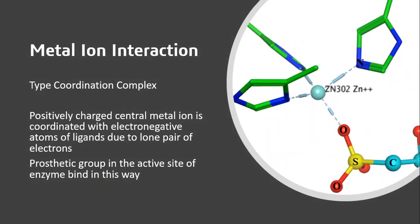Next is metal ion interaction. It is a type of coordination complex in which a positively charged central metal ion is coordinated with electronegative atoms of ligands due to lone pairs of electrons. For example, prosthetic groups in the active site of enzymes bind in this way. Here we show that zinc is coordinated with three histidine residues and a ligand or inhibitor which is bound to this zinc through oxygen.